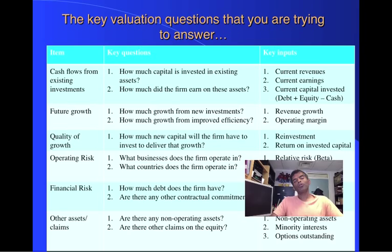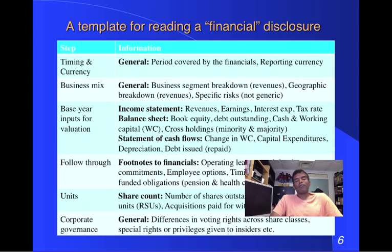So broadly speaking, those are the questions I need answers for — and I have those questions before I even open the 10-K. Here's the template I use for reading any financial disclosure or annual report. First, check for timing: what period does this financial disclosure form cover? It could be a calendar year, June to June, or March to March. Don't assume — you never know what that period is until you've checked it.